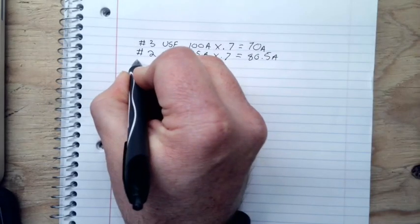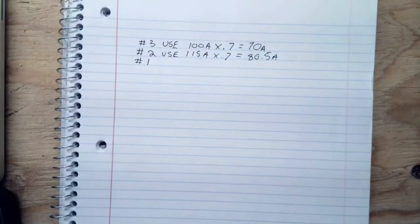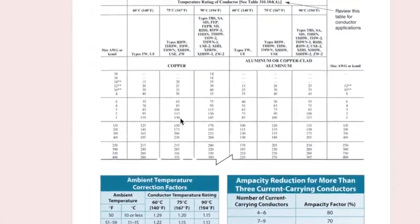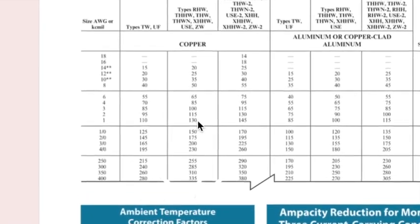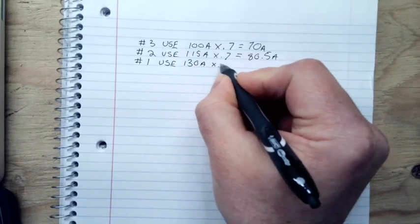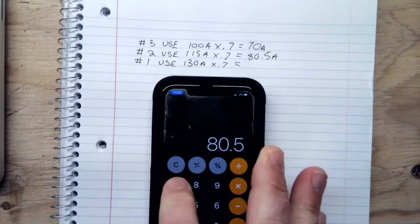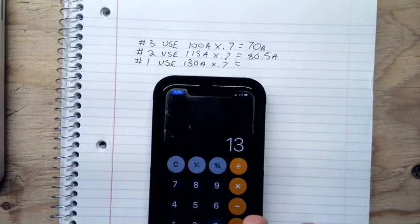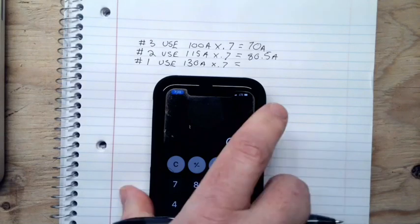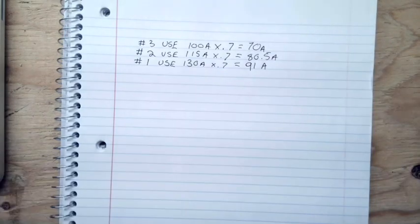So now I'm going to go to a number one. Just because I've been doing this, number one is good to 130. So number one U.S.E. is good to 130 amps times the 70% adjustment factor. So I'm going to take my 130 amps times the 70% equals 91. All right, getting closer to somewhere, but not where we need to be. If I'm remembering correctly, we still need 100 amps.